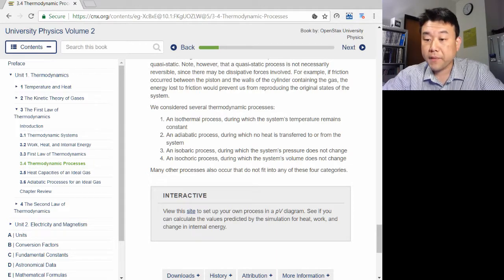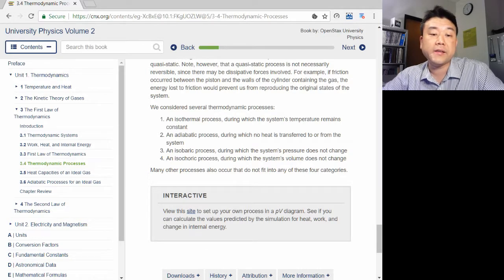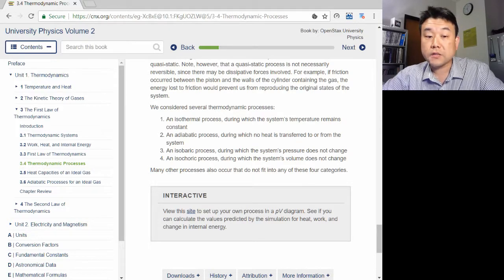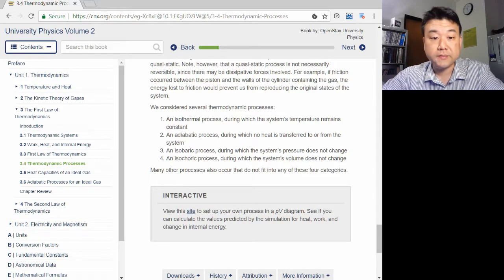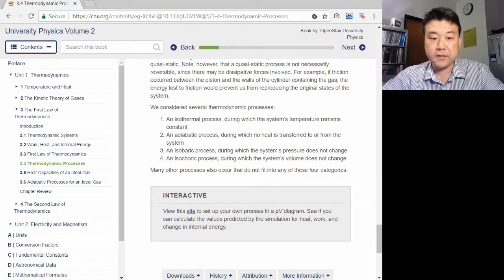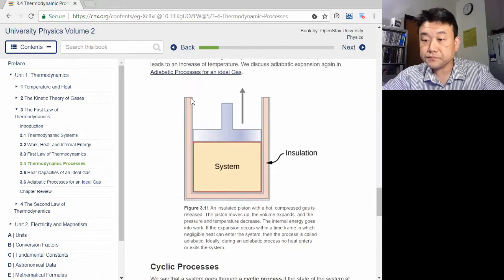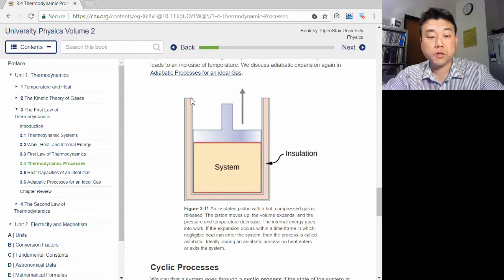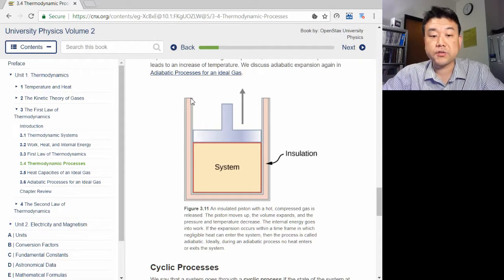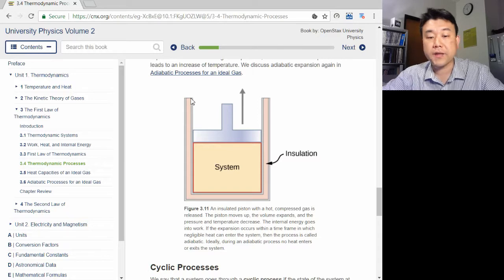In an isobaric process, since the pressure is constant, work done is simply calculated by pressure times the total change in volume. In an isochoric process, by contrast, since there is no volume change, no work at all is done. Finally, in an adiabatic process, since heat transfer is zero, any work done by gas directly leads to the decrease of the internal energy, that is, temperature of the gas by the same amount as the work done.